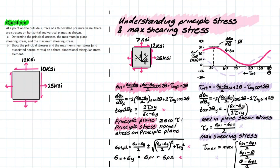A principal stress is the normal stress acting on a plane where the shear stress is zero. From the graph you can visually see that at any critical shear or normal value, shear stress equals zero. We can take this equation, substitute it back into the original stress transformation equation, and simplify it down to a final equation for determining principal stresses. Sigma_p1 is the principal stress with respect to x, and sigma_p2 with respect to y.